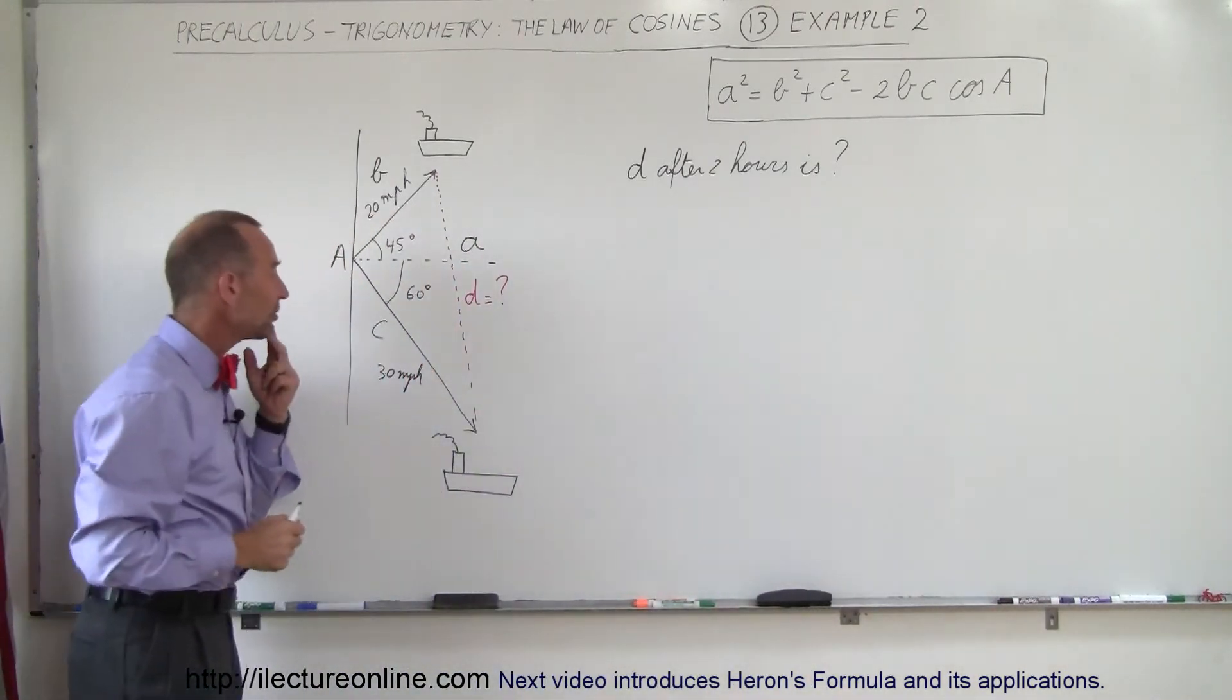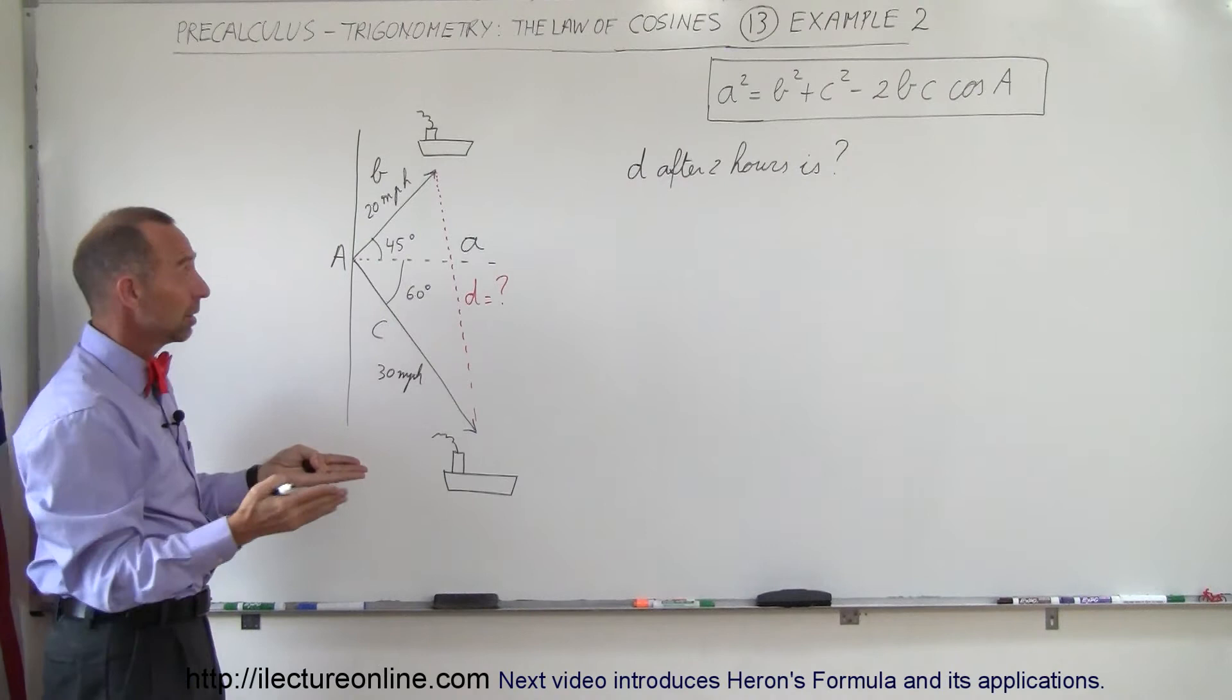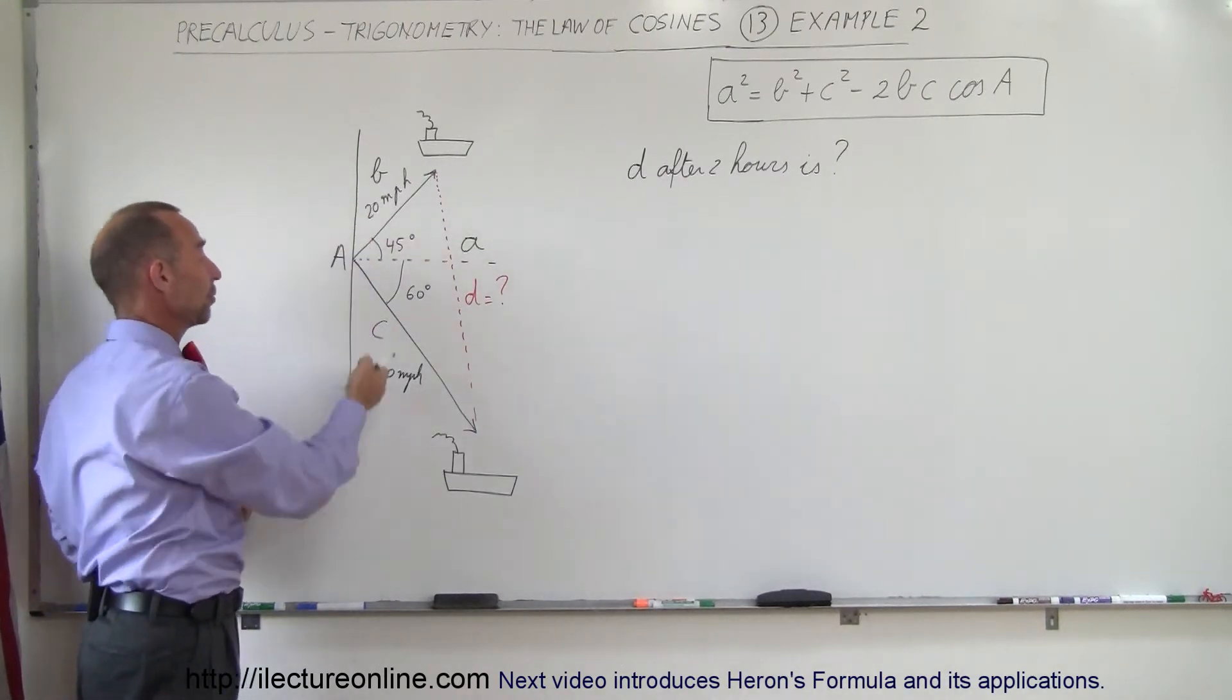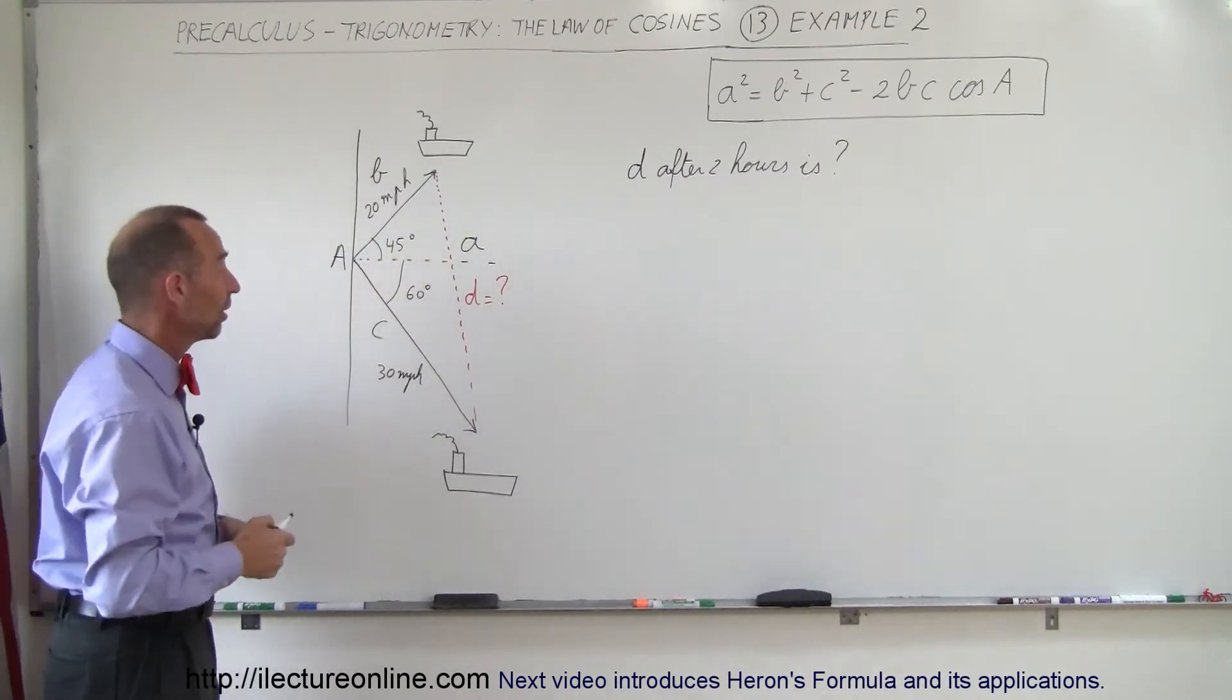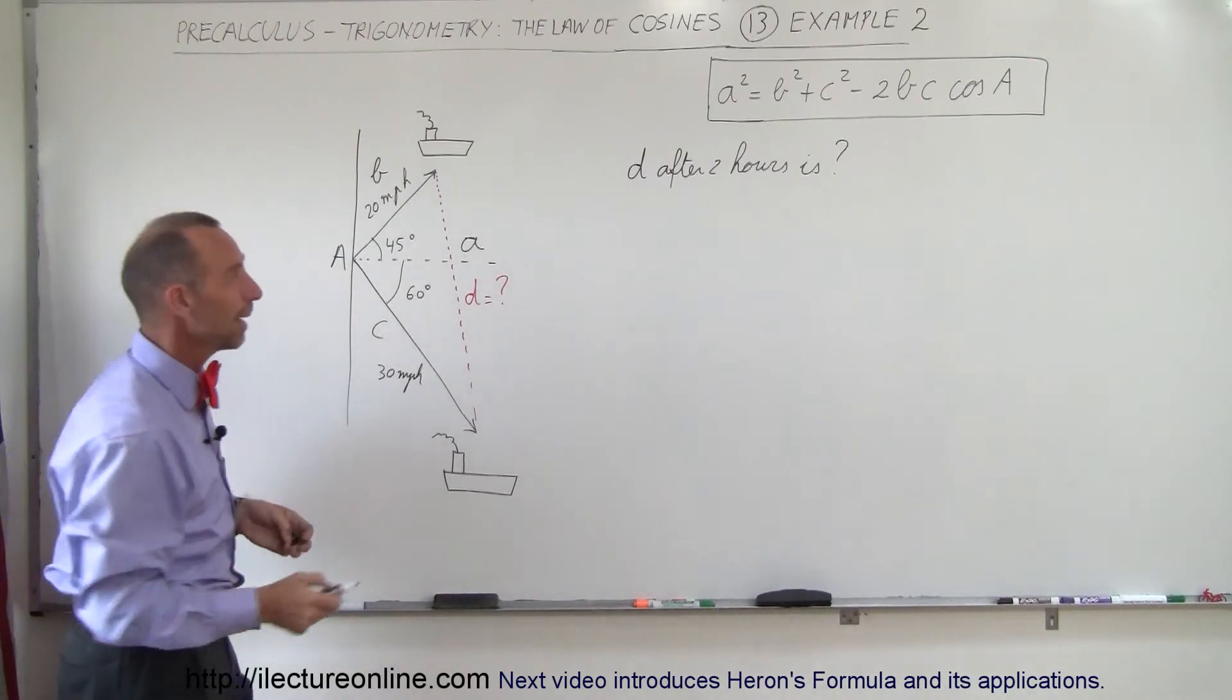And then finally, instead of writing miles per hour, after one hour the distance would be 20 miles and 30 miles, so those are just distances. And so now we can use the law of cosines to figure it out.